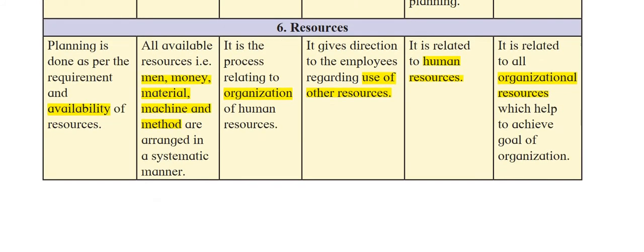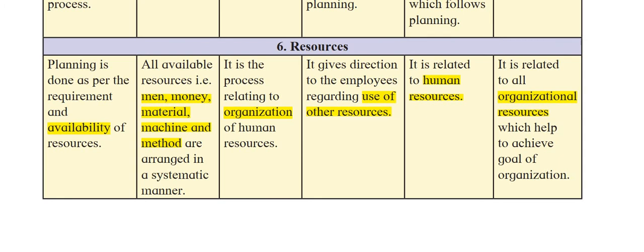The sixth point is resources. Planning is done as per the requirement and availability of resources — you plan based on what resources you have. For organizing, all available resources — man, money, material, machine, and method — are arranged in a systematic manner. Staffing is a process relating to the organization of human resources, giving the correct person the correct job at the correct time.